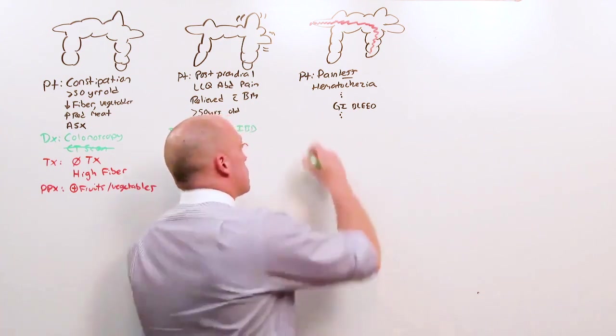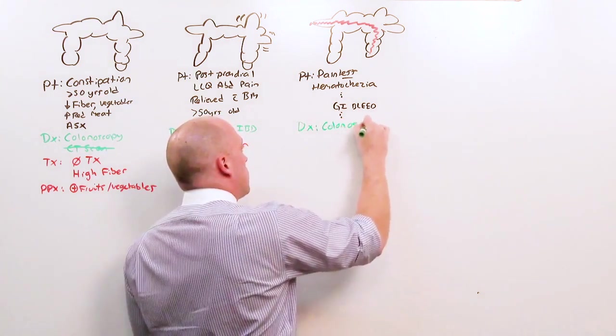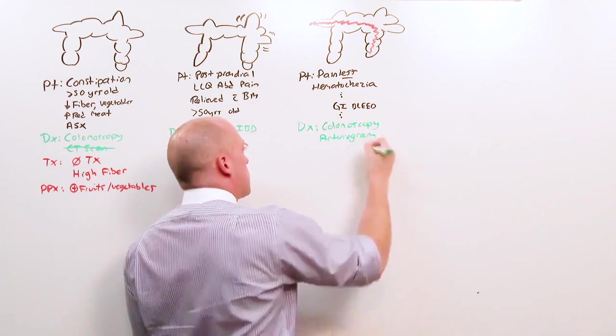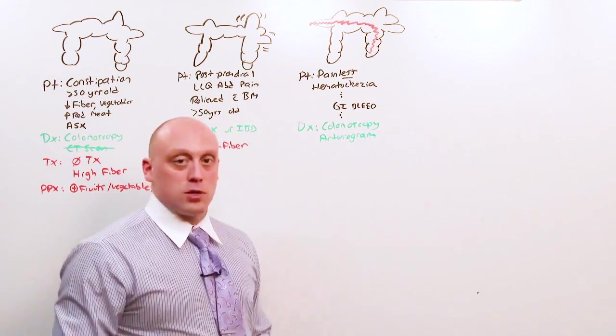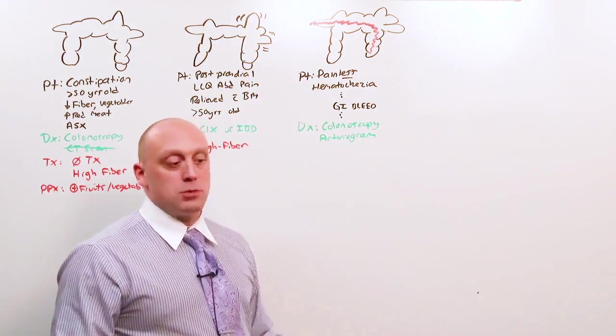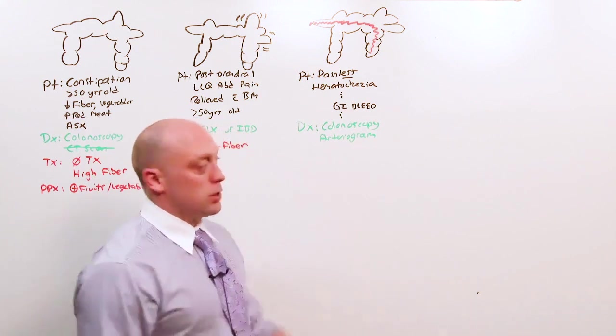Once you've ruled out everything else, you're going to get either a colonoscopy or an arteriogram. You're going to get a colonoscopy after the bleeding is done. It self-resolves, the person doesn't die, they're not constantly hemorrhaging, bleeding stops, do a colonoscopy. There's nothing in here but some diverticula, so you presume it's diverticular hemorrhage.